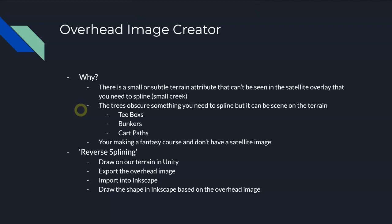The last one, which is a really interesting use case as well, is let's say you're making up a course and you have a terrain and you go in there and you just start flattening out your tee boxes and sculpting your terrain for the course. Well, you have no satellite overlay. So what do you do? You can draw on the terrain and then export that drawing and spline it out in Inkscape. So there's another use case.